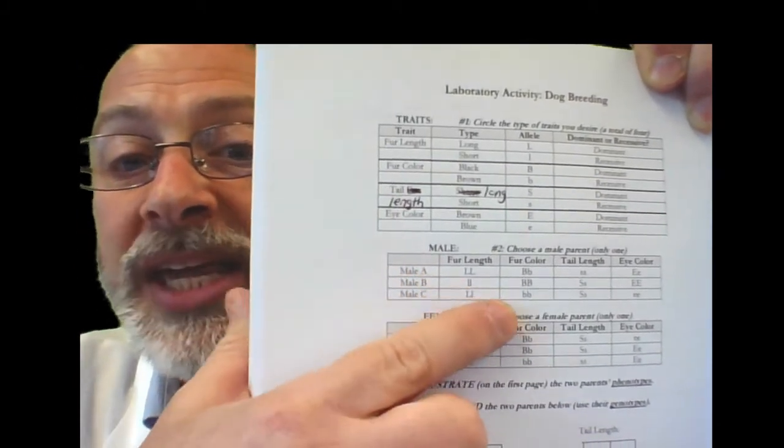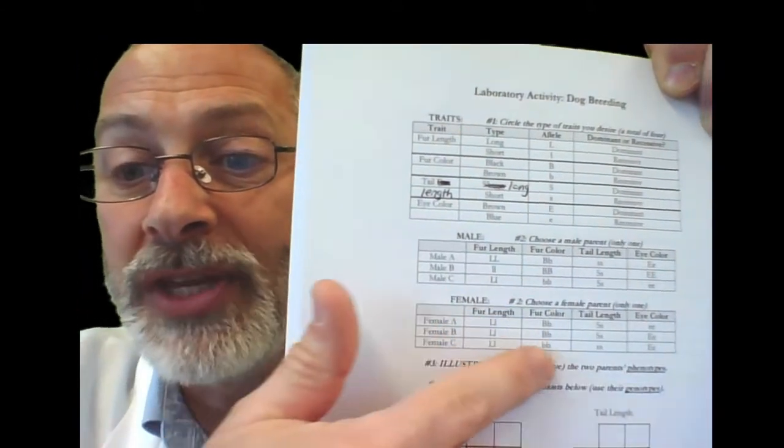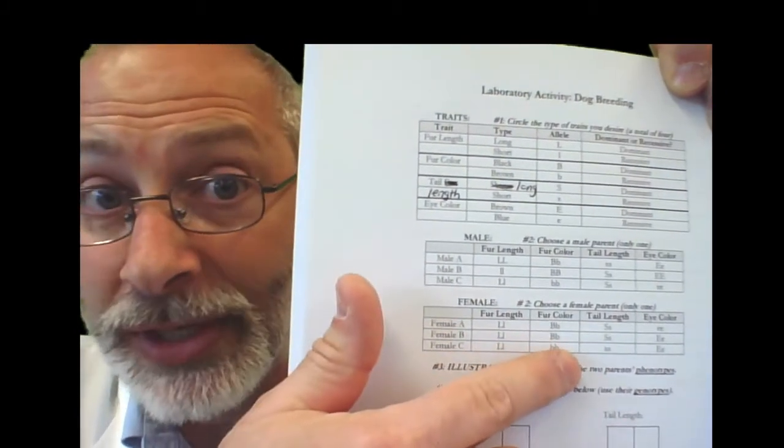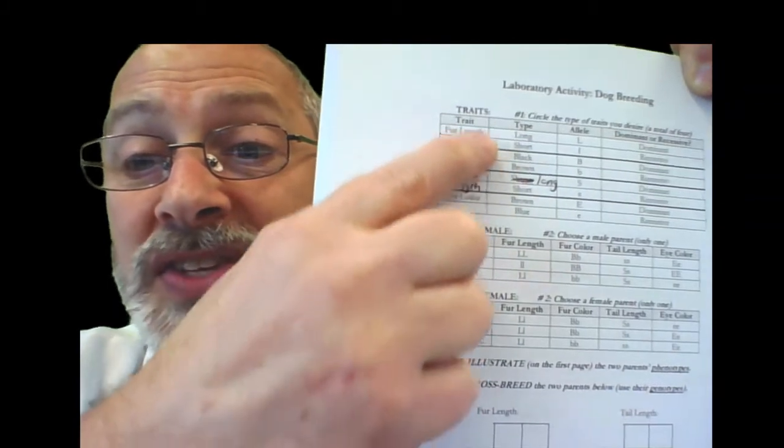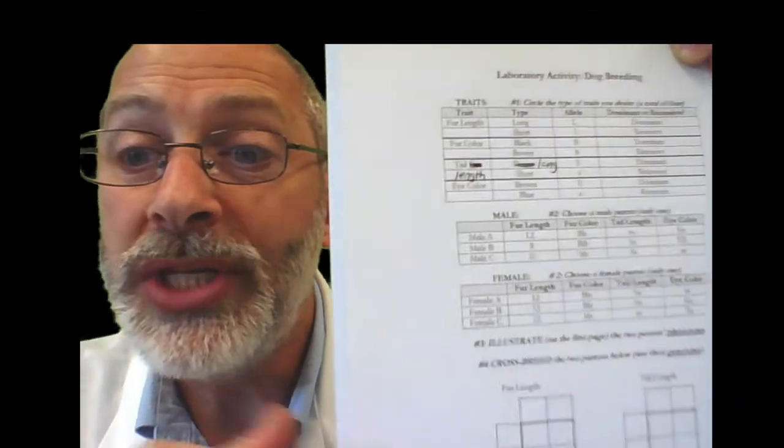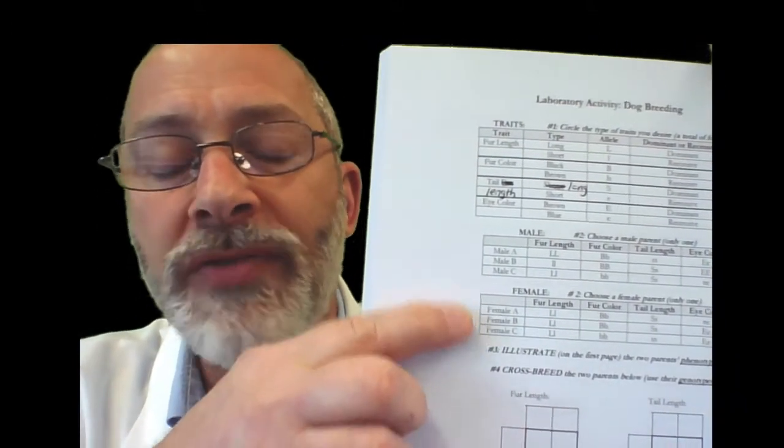You should be looking at their genotypes, the genetic makeup for each of these categories. Based on the selection of traits that you desire, you determine which of the three males and which of the three females, one of each.